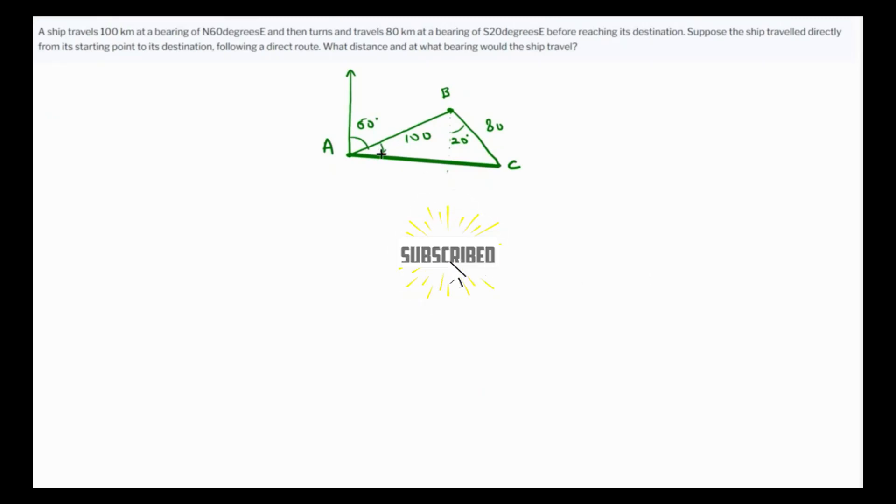We are given 100 kilometers as already written. This is 100 kilometers, this is 80 kilometers, and this is already given at 60.